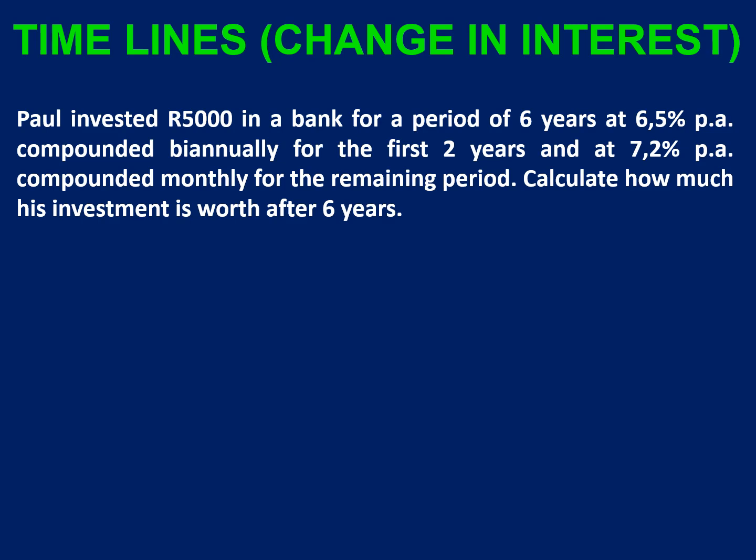So Paul invested five thousand rand in a bank account for a period of six years. For the first two years he's going to earn 6.5% per annum compounded biannually, and for the remaining period he's going to earn 7.2% per annum compounded monthly. How much is his investment worth after six years?